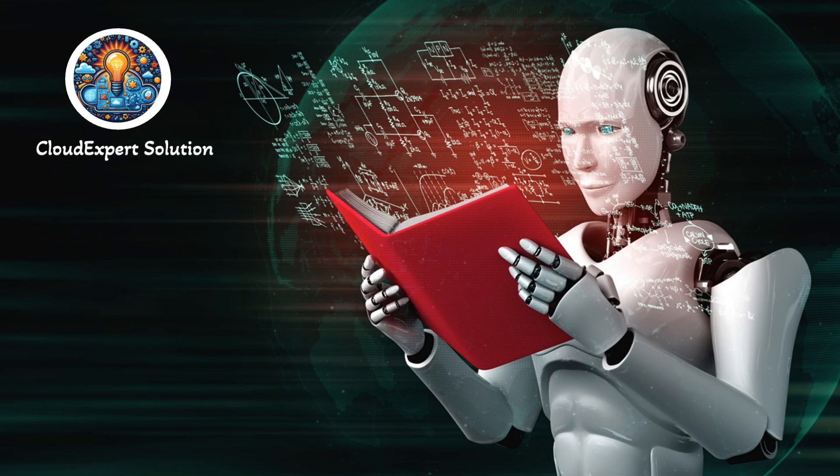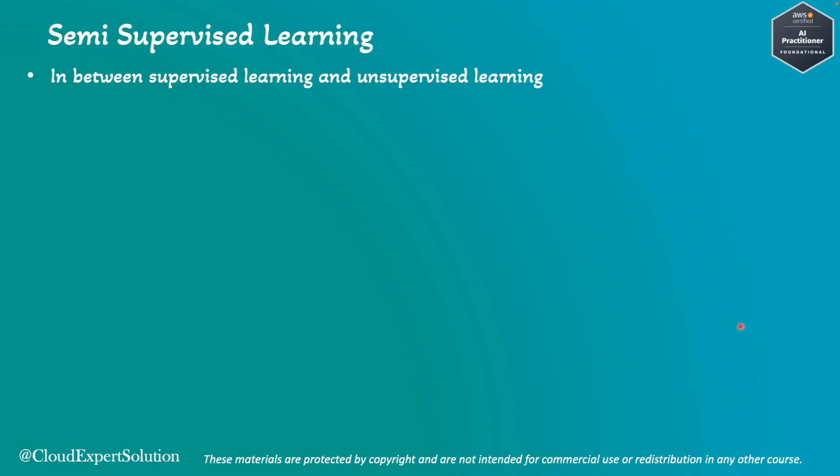Let's begin with Semi-Supervised Learning. Semi-supervised learning sits between supervised learning and unsupervised learning. Supervised learning uses only labeled data, whereas unsupervised learning uses only unlabeled data. Semi-supervised learning uses both labeled and unlabeled data to train the model.